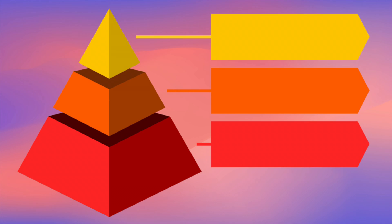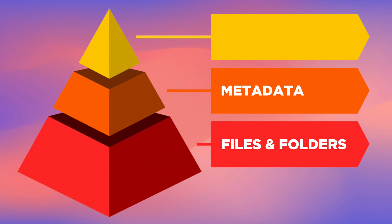The key to this organisation — and building in redundancy to your setup — is to use a pyramid system. At the base of the pyramid is files and folders, because this is what changes the least often. Above it is metadata, because while this doesn't need to change, it can be added to or altered. And at the top is software, because it's highly likely that the apps you use will change over the years. Build your photo library from that bottom tier up and you'll have a flexible system that can adapt as your needs change. So let's talk about the base of that pyramid: files and folders.